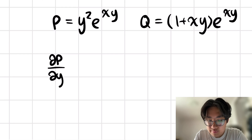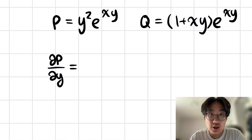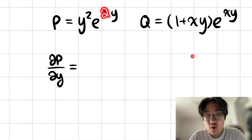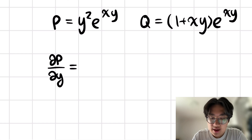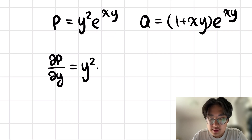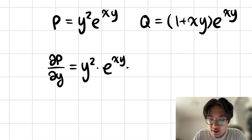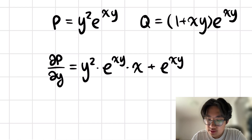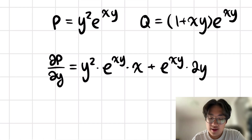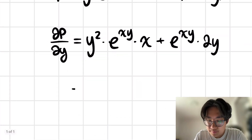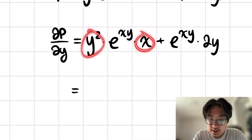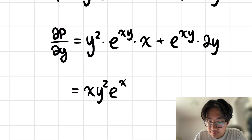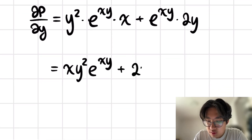Let's compute partial P partial y. We're treating y as a variable and x as a constant. We need the product rule because we have two functions of y: y squared and e to the xy. So it's first times the derivative of the second, which is x times e to the xy, plus the second times the derivative of the first, which is 2y. Cleaning this up: xy squared e to the xy plus 2y e to the xy.